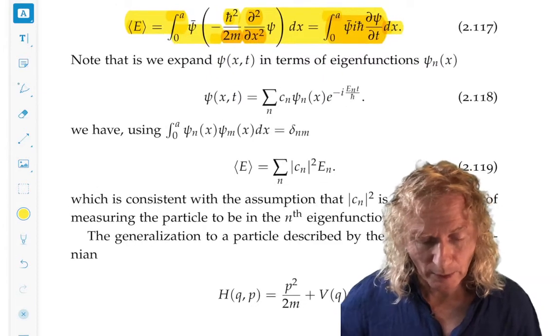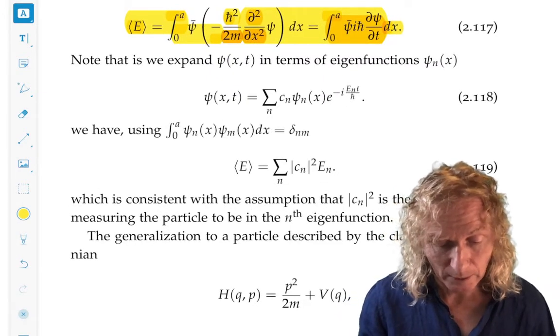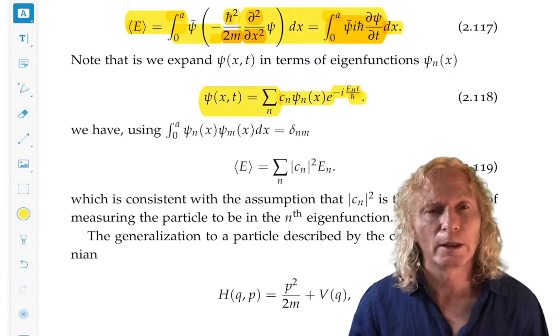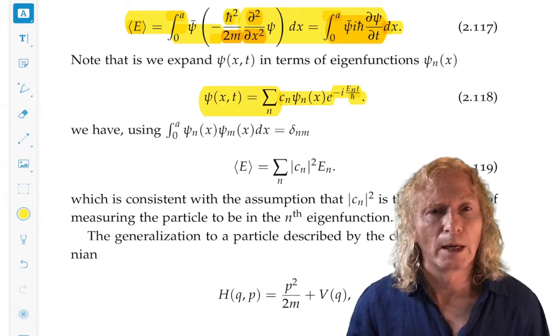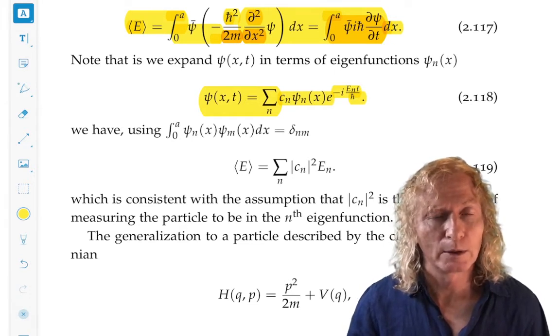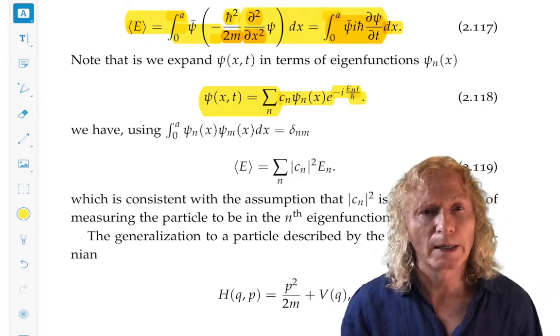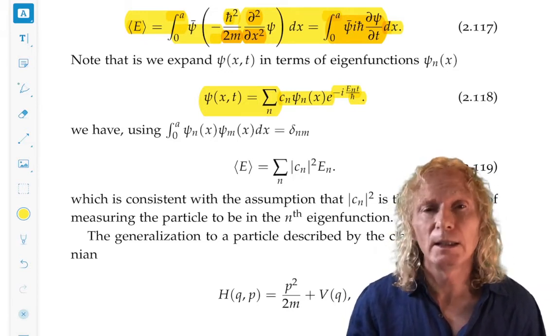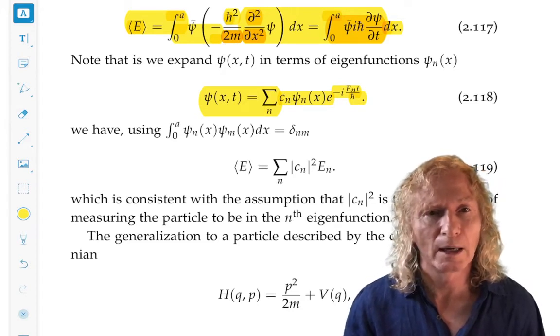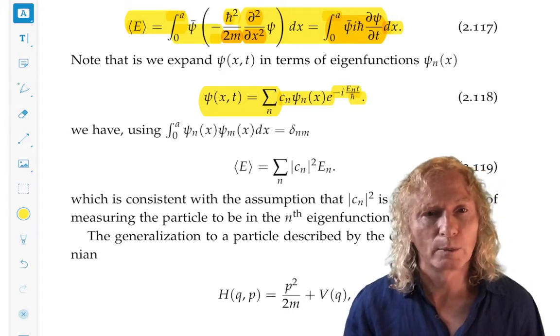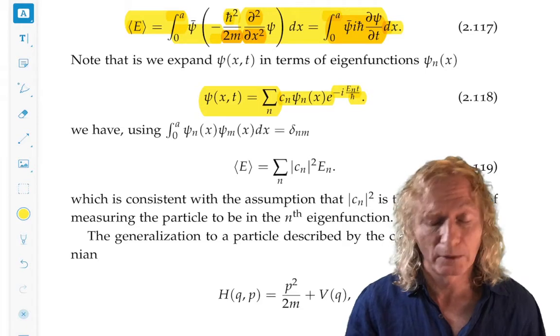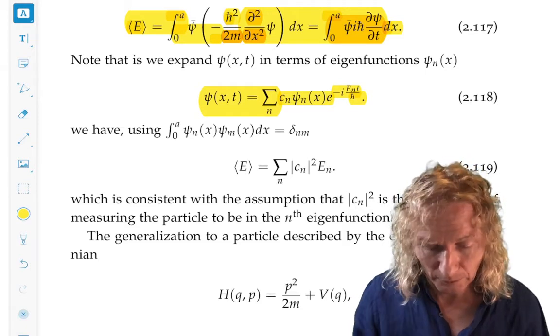So we can use that result to re-derive something that we've already seen earlier in the square well. We know that we can represent a general state as a linear combination of eigenfunctions of the time-independent Schrödinger equation, psi n of x, each of those multiplied by e to the minus i e n t over h bar, where e n is the eigenvalue corresponding to the eigenfunction or eigenstate psi n.